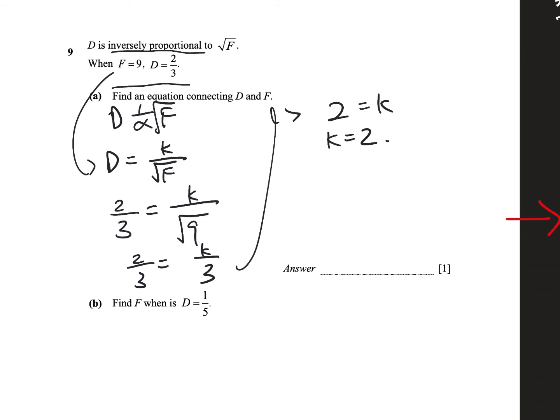And so if I multiply 3 by both sides, what I get is 2 equals to K, and so, yes, K equals to 2, so an equation really is D equals to 2 over the square root of F, because I solved for K, which is 2, and I knew that D equals to K over the square root of F. Cool, so let's just write that down, and that is my equation. It's an equation connecting D and F.